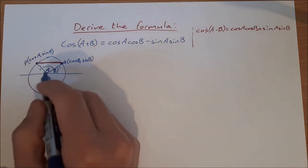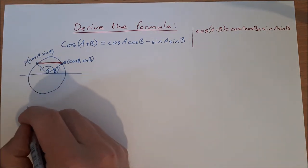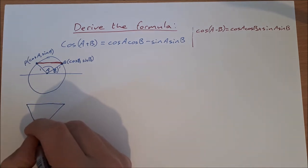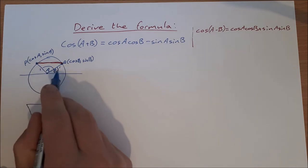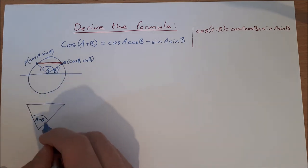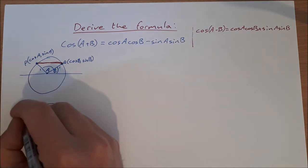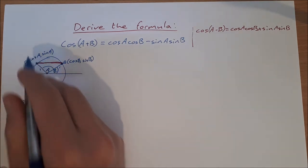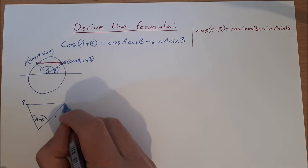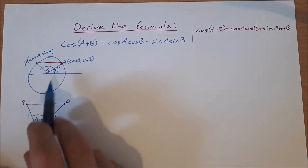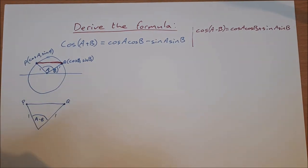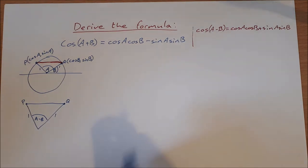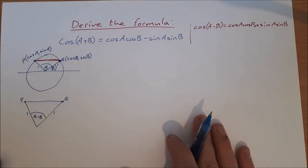And if I take that triangle there, I can take that triangle down here and just draw it a little bit bigger. This angle now is A minus B, so it's the big one minus the small one. The length of that is 1, the length of that is 1. This is the point P with the same coordinates as there, and this is the point Q with the same coordinates as there.